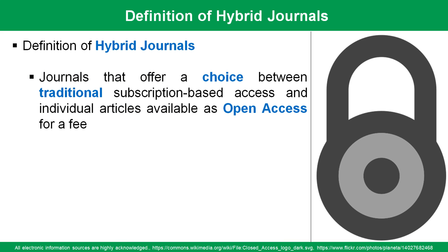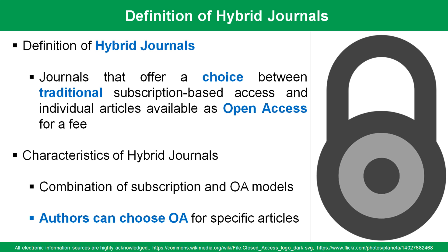Hybrid journals represent a middle ground, offering both traditional subscription-based access and the option for authors to make individual articles open access for a fee. This model allows researchers to choose between publishing in a subscription format or opting for open access for specific articles. Hybrid journals maintain the prestige associated with established publishers and journals, making them attractive to authors and institutions with traditional publishing expectations. The flexibility of this model accommodates diverse preferences within the scholarly community.